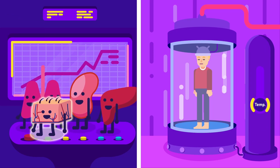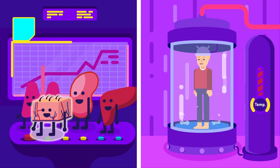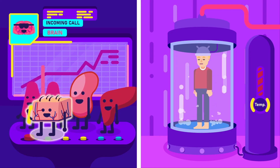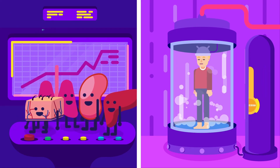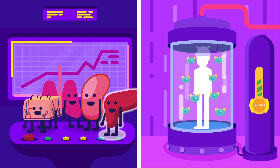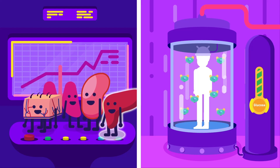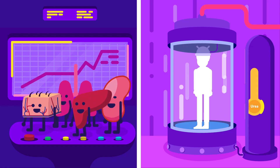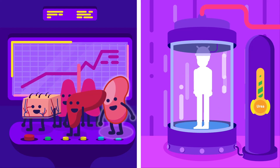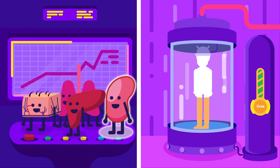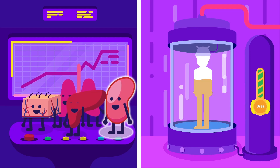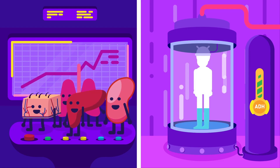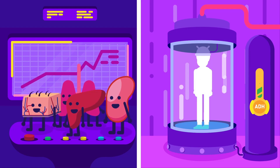Skin regulates temperature, which is controlled by the hypothalamus of the brain. Liver helps in regulating glucose by controlling the levels of insulin in blood. Kidney regulates urea and excess mineral salts by the excretion of urine and water by antidiuretic hormone.